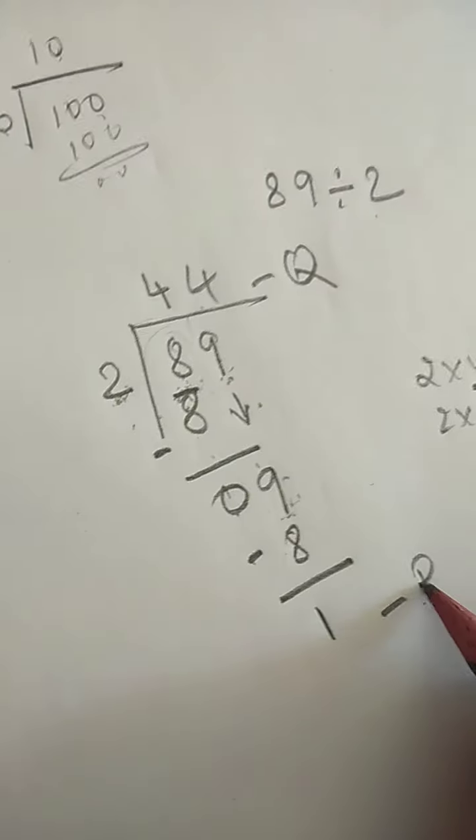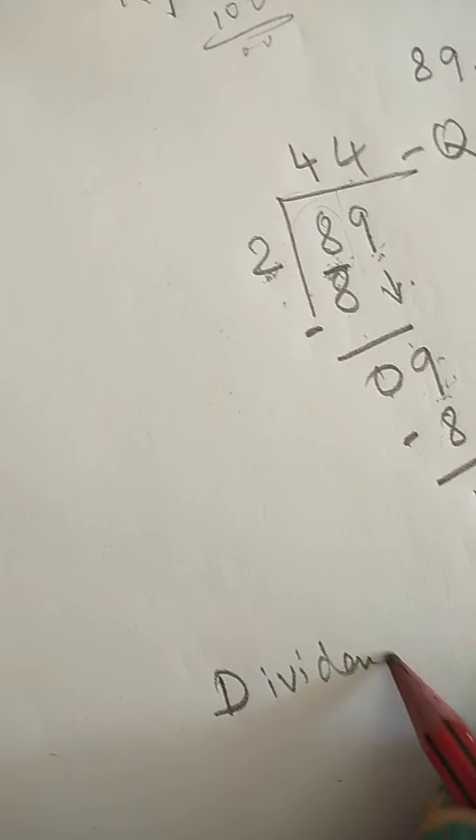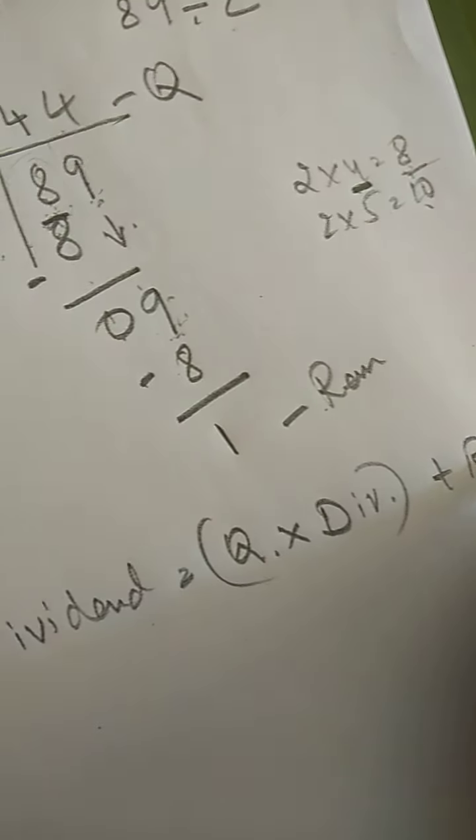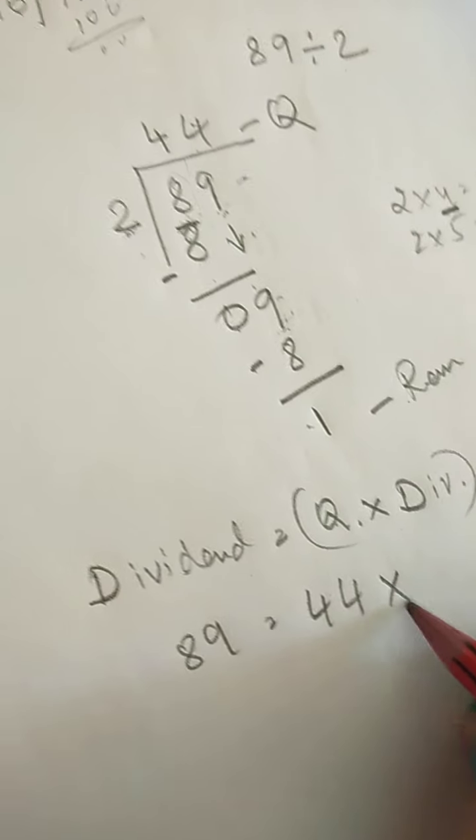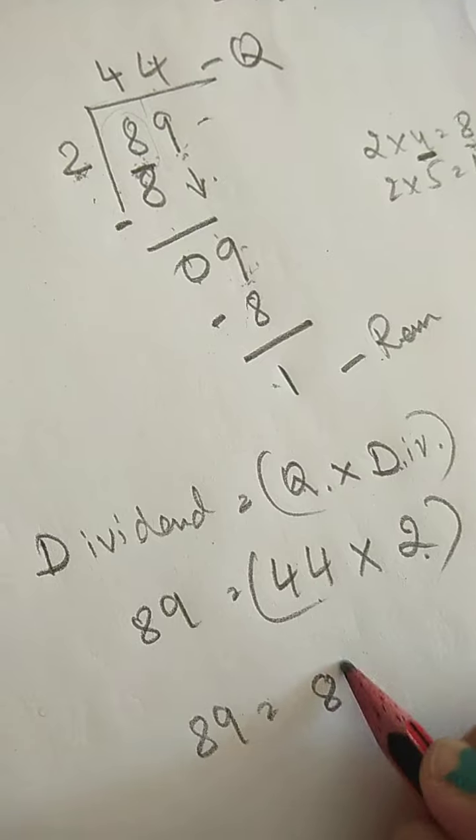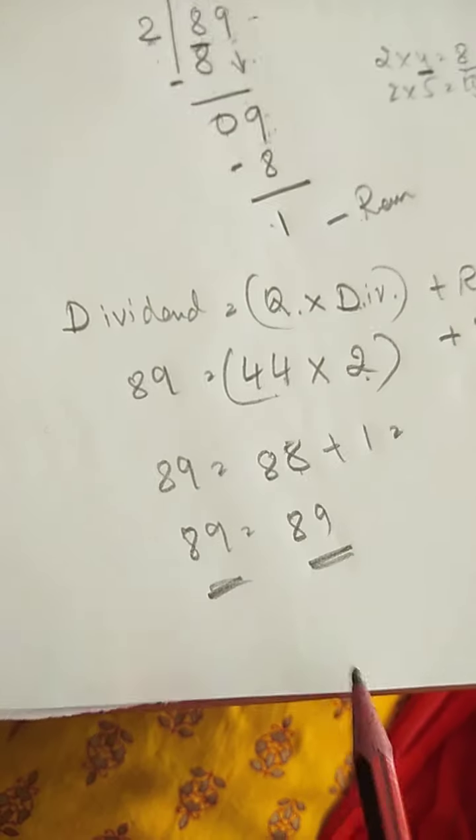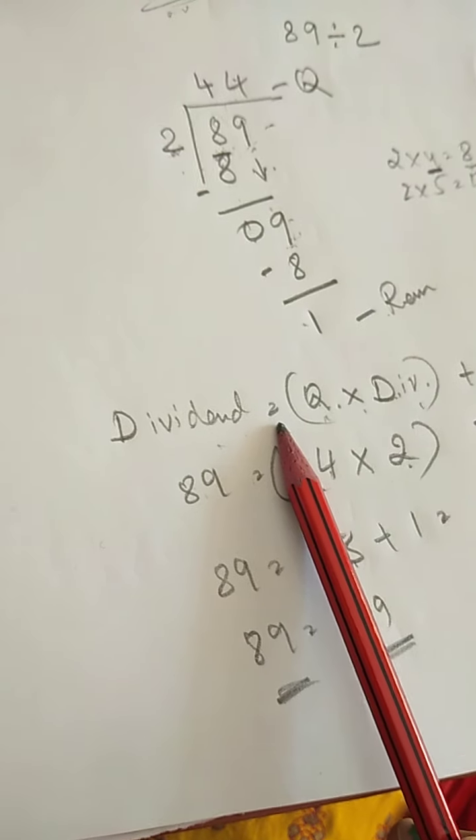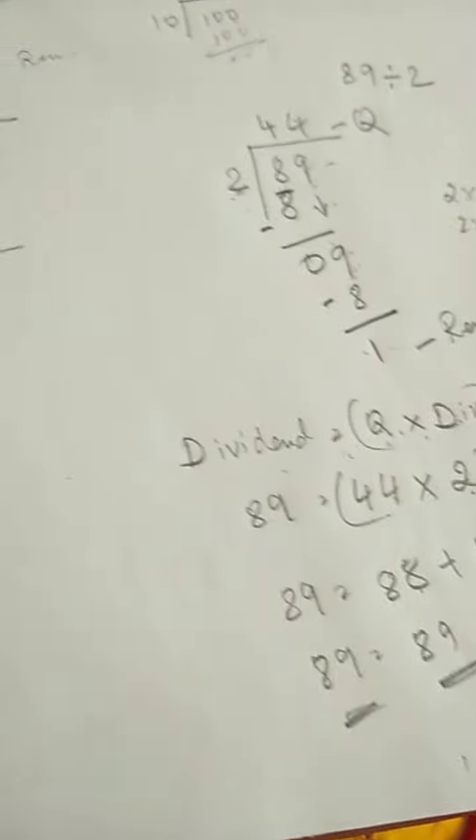So this is quotient. This is remainder. Now let me verify. The verification formula is: dividend is equal to quotient multiplied by divisor plus remainder. Dividend is 89. Quotient is 44. Multiplied by divisor is 2. So 89 equals 44 multiplied by 2 is 88, 2 times 4 is 8, 2 times 4 is 8 plus 1. 89 is equal to 89. So this sum is correct.